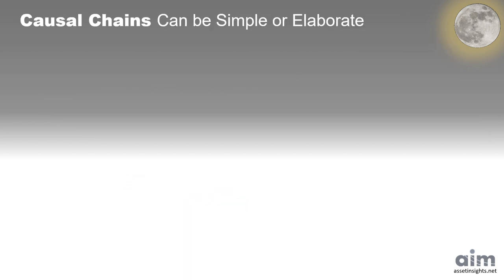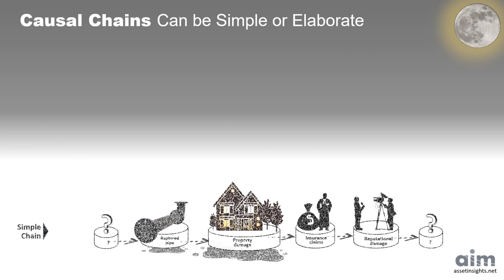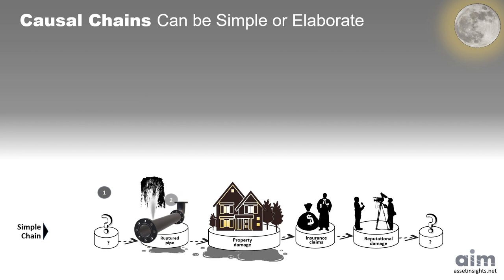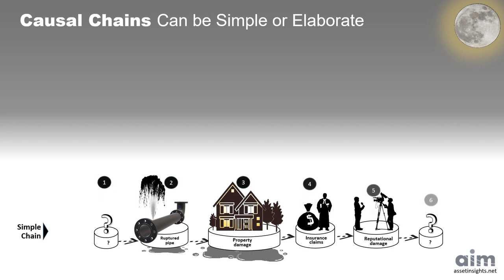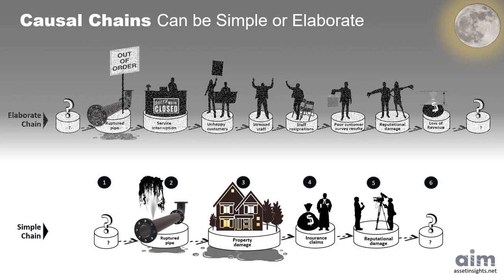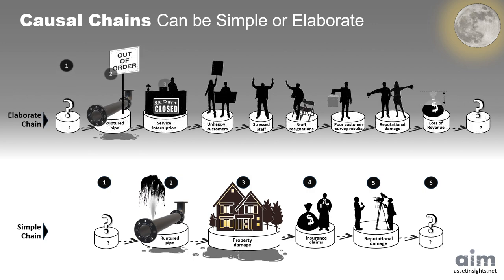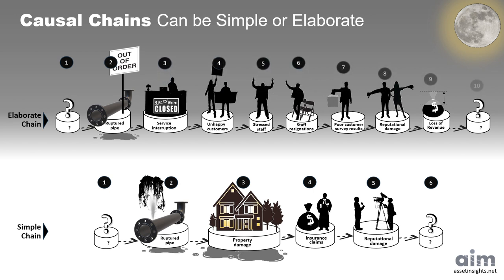Not all risks unfold the same way. Some stories are short, while others spiral. Causal chains can be simple or elaborate. The deeper we trace the chain, the better we understand the true cost of a single failure, and where to intervene before things escalate.